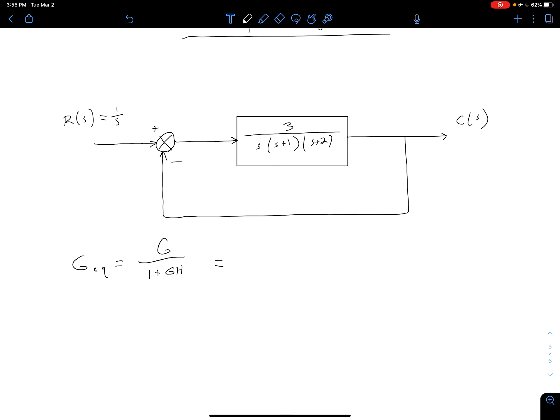So if we end up doing that for this function here, of course our H is just 1. So we're going to end up with 3 in the numerator and in the denominator we'll have s cubed plus 3s squared plus 2s plus 3.